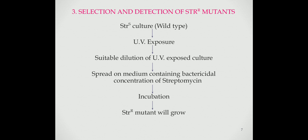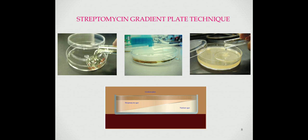The third example is selection and detection of streptomycin resistant mutants. The streptomycin resistant mutants are the mutants that grow in medium containing bactericidal concentration of streptomycin. To select and detect streptomycin resistant mutants from a streptomycin sensitive population, streptomycin sensitive cell suspension is exposed to mutagen to increase the rate of mutation. A suitable dilution of the mutagen-exposed culture is spread on solid medium containing bactericidal concentration of streptomycin. The plates are incubated at suitable temperature for 24 hours. The streptomycin resistant mutants will grow and form colonies, while streptomycin sensitive cells are killed. The streptomycin gradient plate technique is commonly used for this purpose, giving the minimum inhibitory concentration of streptomycin for wild type organism. Organisms growing above MIC are streptomycin resistant mutants.